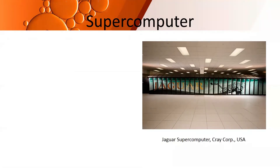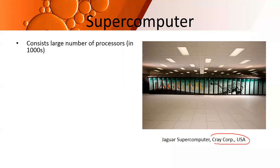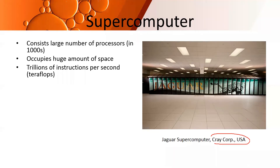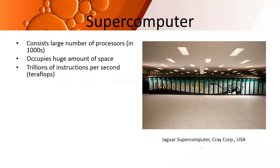Next is the supercomputer. One example is Jaguar, created by Cray Corporation, USA. A supercomputer is even larger than a mainframe and is used for very specialized applications. It consists of thousands of processors — where mainframes contain hundreds, supercomputers contain thousands. It occupies a huge amount of space. It executes trillions of instructions per second, measured in teraflops.